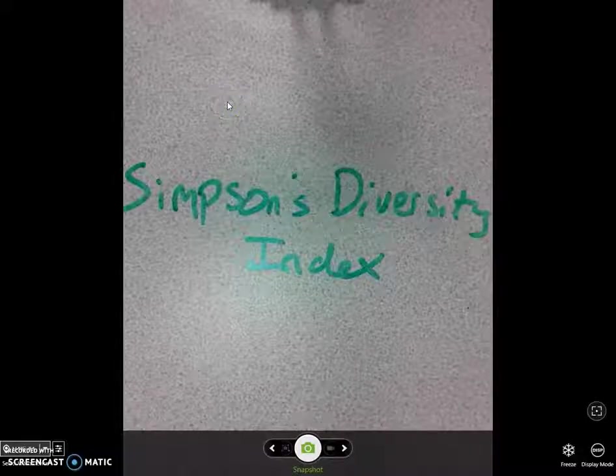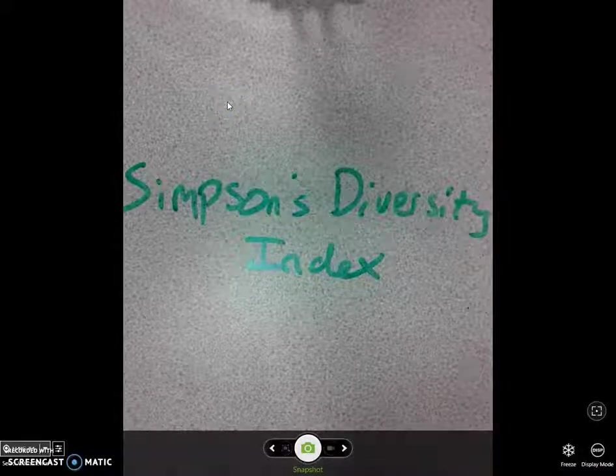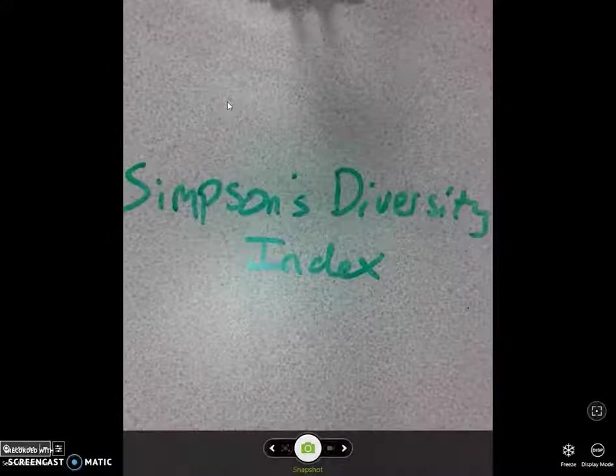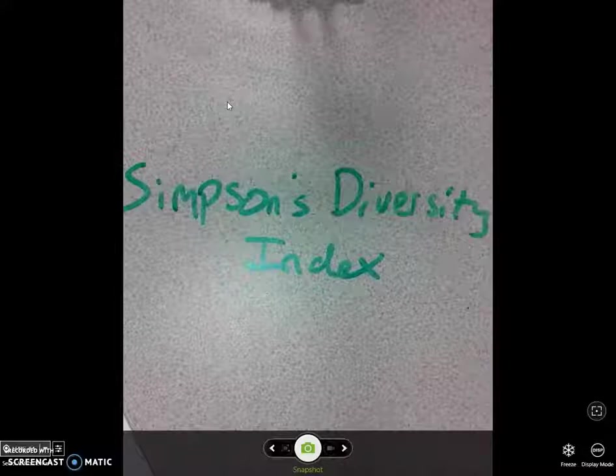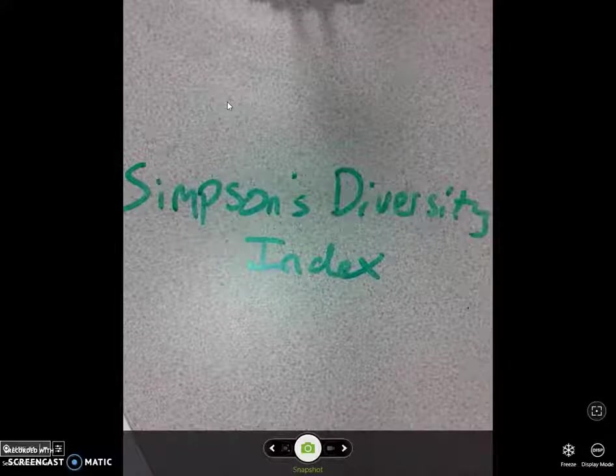Hello folks, here's a short video on Simpson's diversity index, which is something that you need to be able to calculate when you are given data about the number of species found in a particular region.